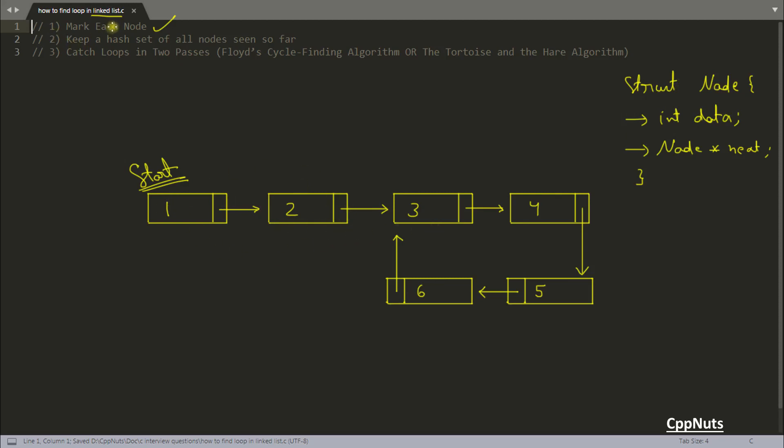First one is mark each node. Marking requires one more extra field to be included in your original structure. It could be a boolean flag like you can include another thing here saying bool visited, and when you are creating this list that time you initialize this visited with false.